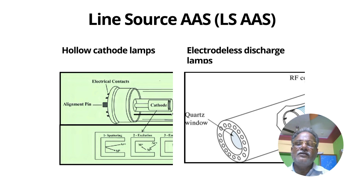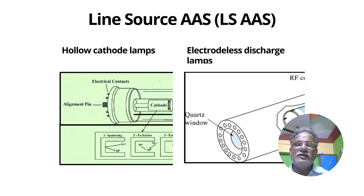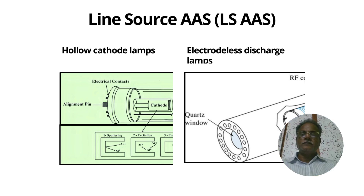Let us see the hollow cathode lamps. Schematically, the hollow cathode lamps are visualized here, along with electrodeless discharge lamps. Electrodeless discharge lamps are also shown here. Electrodeless discharge lamps contain a quartz window through which the radiation comes out. These two radiation sources are used for line-source atomic absorption spectroscopy.